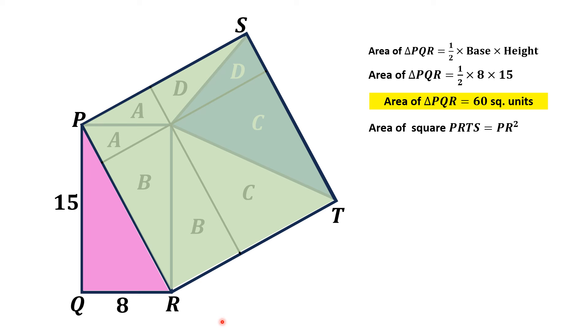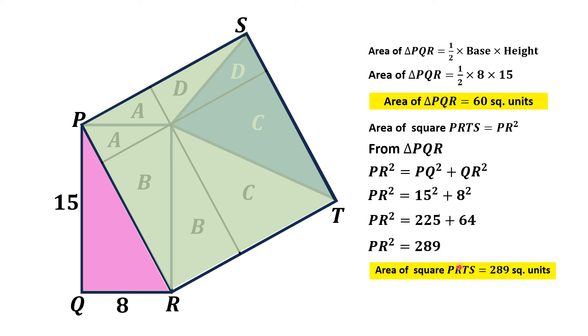The area of this square is equal to PR squared. So we focus to find PR. By using the Pythagorean theorem on this right triangle, PR squared equals PQ squared plus QR squared, which equals 15 squared plus 8 squared, which equals 225 plus 64, which is 289. Thus, the area of this square is 289 square units.